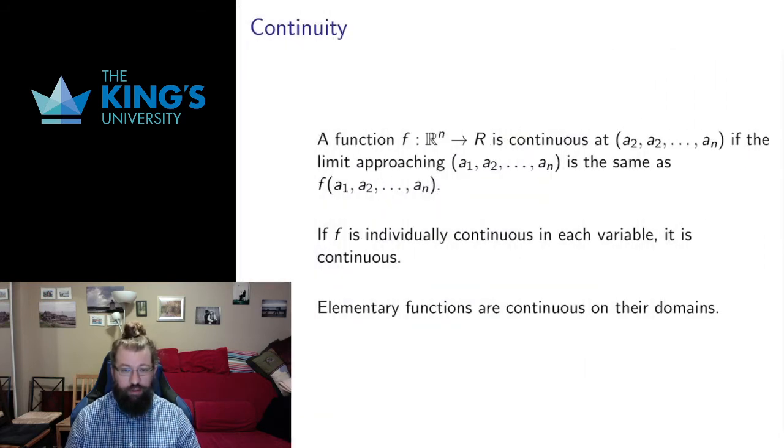Limits in single variable functions define continuity. The same thing is here. A function is continuous at a point, a point is now a point in R^n, not a point on the real number line, if the limit approaching this point is the same as the function value.